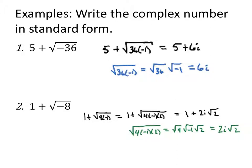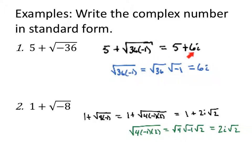So we're going to write the complex number in standard form. I have 5 plus the square root of negative 36. The square root of negative 36 — I could think of that as 36 times negative 1 underneath the radical. There's a product property of radicals: the square root of a product equals the product of the square roots. I know the square root of 36 is 6. I know the square root of negative 1 is i. So I now have 5 plus 6i, replacing the square root of negative 36 with the complex number 6i.